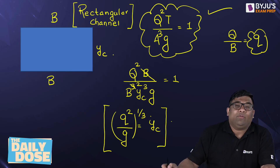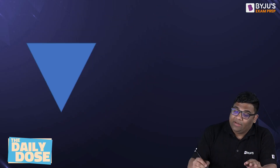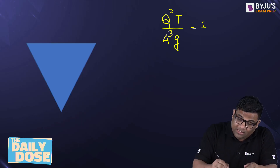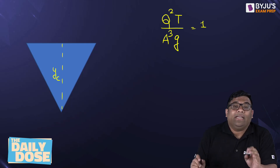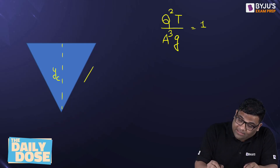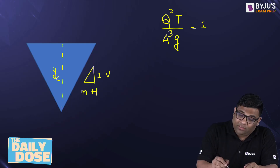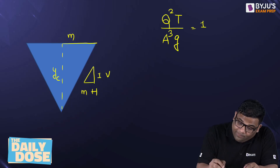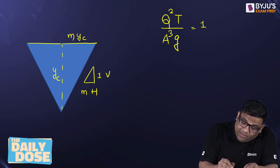Now, what will be the equation for a triangular channel? For a triangular channel also, it will remain the same: q squared t by a cubed g is equal to 1, but how we apply the equation will change. Suppose it is a triangular section with depth yc and side slopes of 1 vertical to m horizontal, so the half top width will be m into yc.